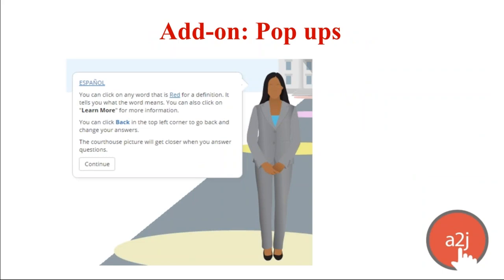Another way to give additional information at the point the user needs it — we call it just-in-time learning — is with pop-ups. Here's an example: the two blue underlined words are pop-ups. This question has a pop-up where the entire question is translated into Spanish. So if the end user is working with someone at a help desk or kiosk, the helper speaks English but the user is more confident reading in Spanish — you can have that translation in a pop-up. Our friends in New York use this a lot.